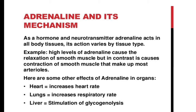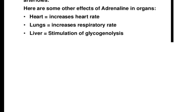On the heart, adrenaline increases the heart rate. It acts as a neurotransmitter in our sympathetic system, which increases the heart rate. On the lungs, it increases the respiratory rate. In the liver, it stimulates glycogenolysis — meaning it produces new glucose molecules from glycogen. Adrenaline acts on alpha-1, alpha-2, beta-1, and beta-2 adrenergic receptors.